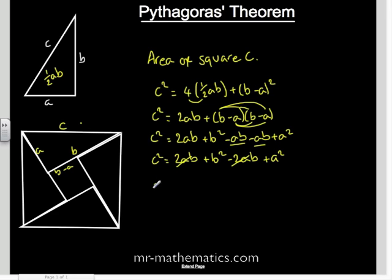And we can simplify those two terms. So C squared equals A squared plus B squared, which is Pythagoras' theorem. Thank you.